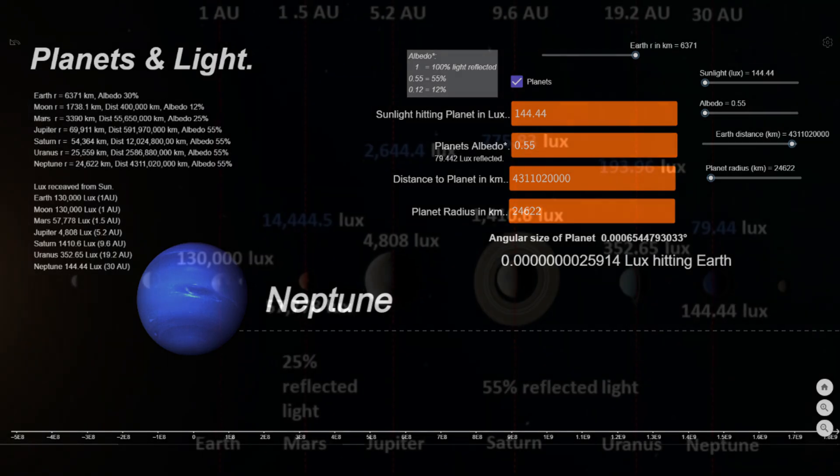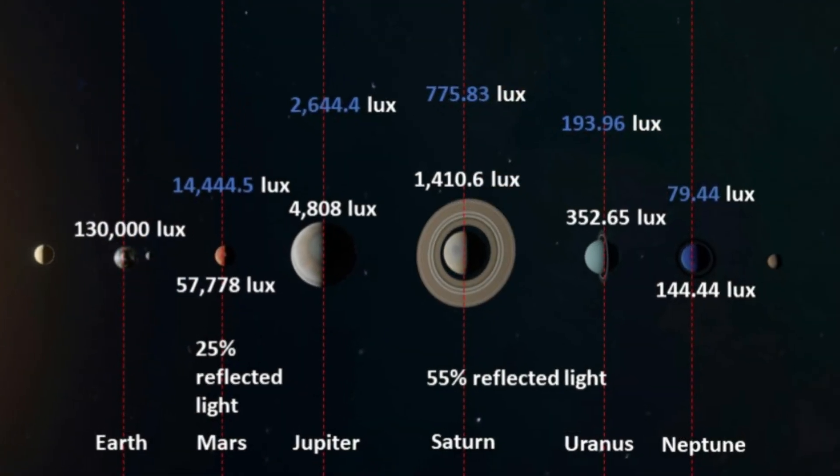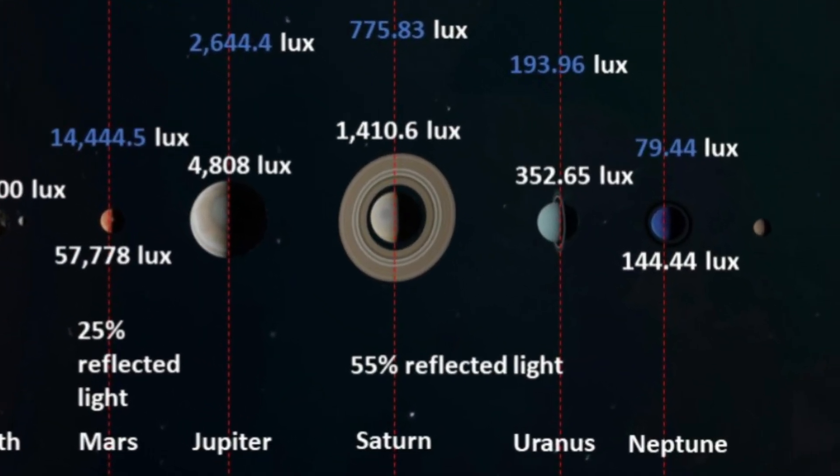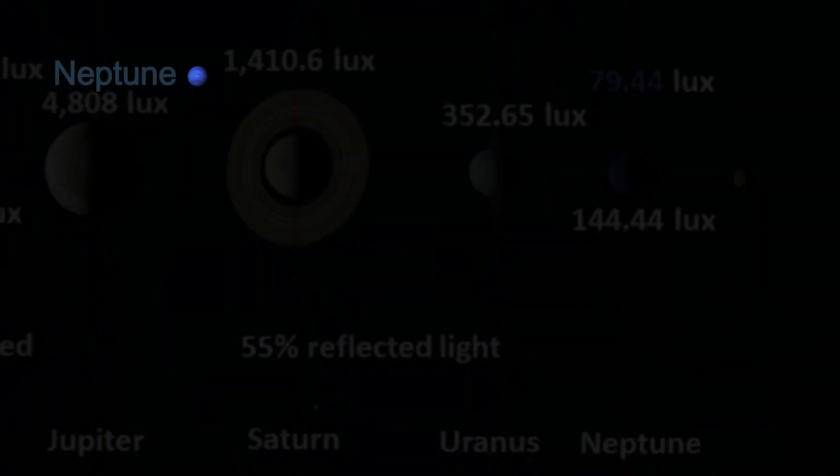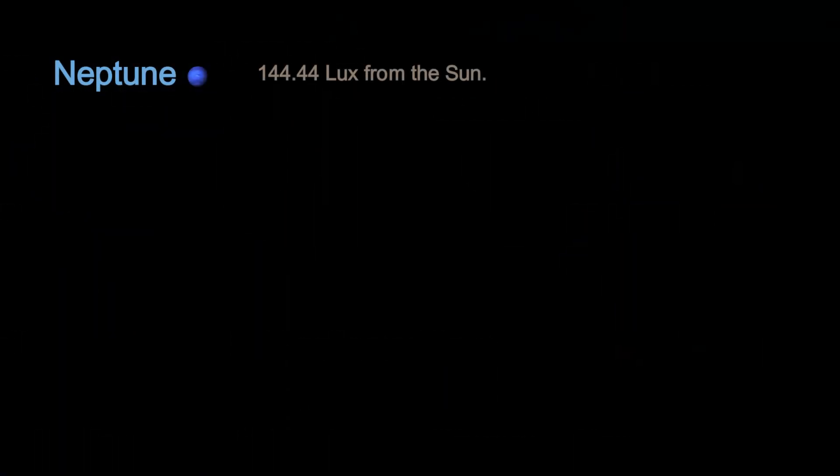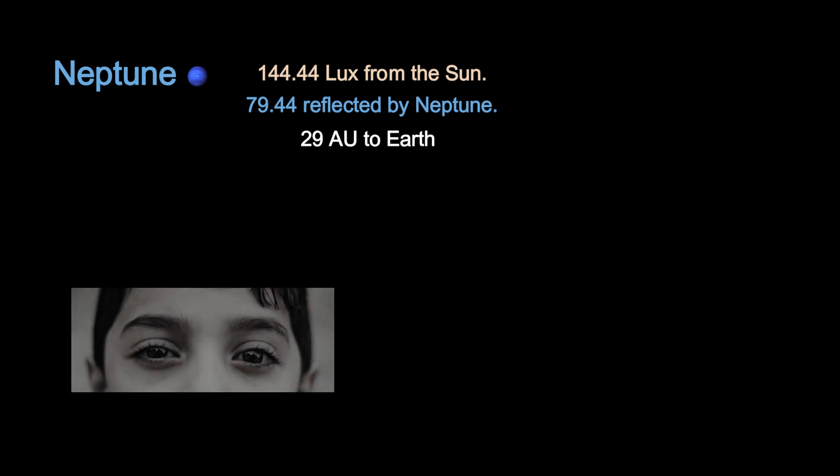A case in point, Neptune. Neptune, at 30 times further away from the Sun as Earth, receives only 144.5 lux of light from the Sun. It reflects only 79.5 lux of that light. It then needs to travel 29 AU, or Sun-to-Earth distances to our eyes. This is the amount of light hitting Earth.